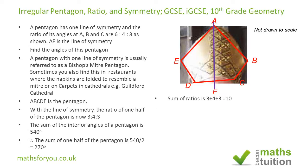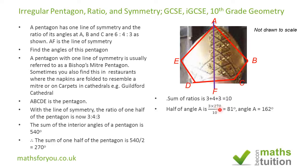The sum of the ratio parts is 3 plus 4 plus 3, which is 10. So 10 parts correspond to 270 degrees. Angle A (half) is equal to 3 over 10 times 270, which gives 81 degrees. The full angle A is therefore double 81, which is 162 degrees.